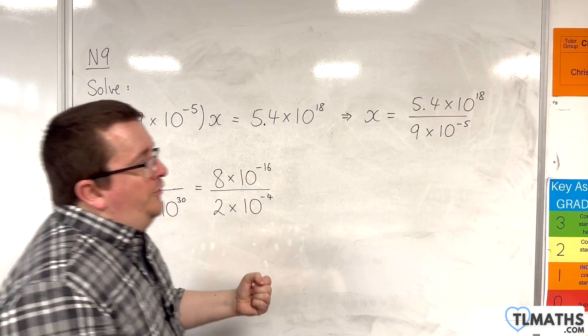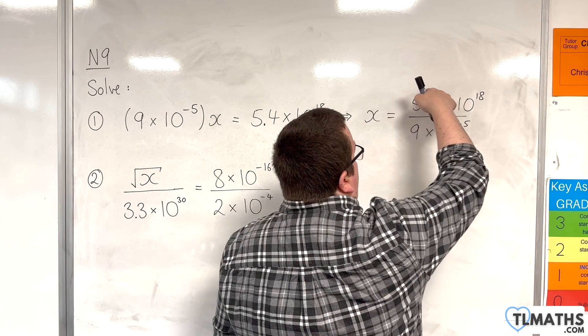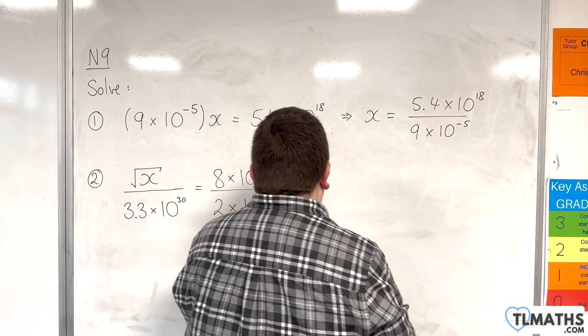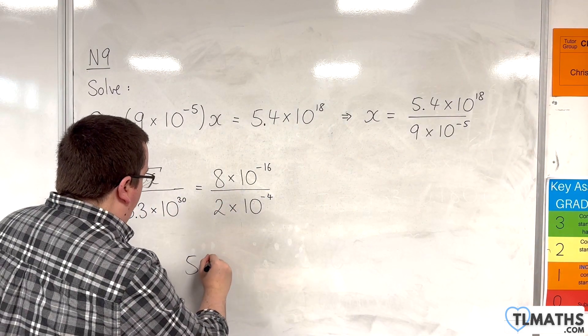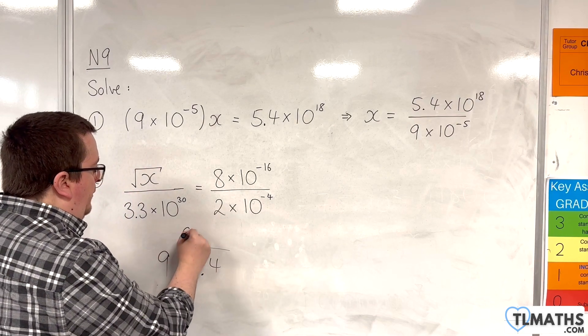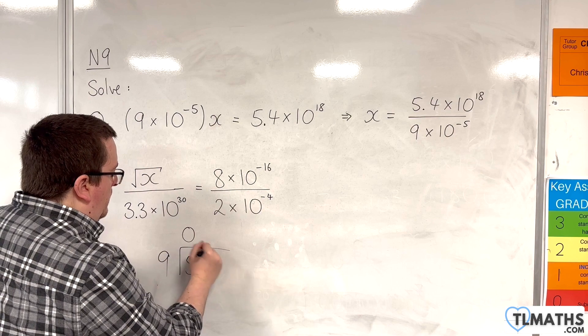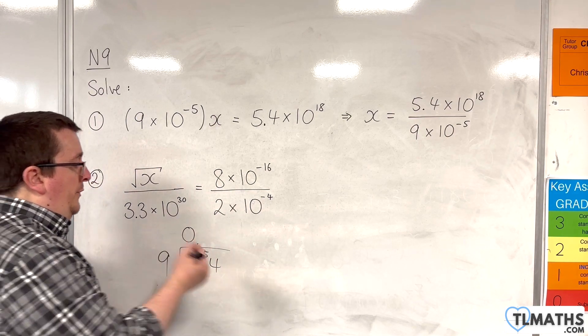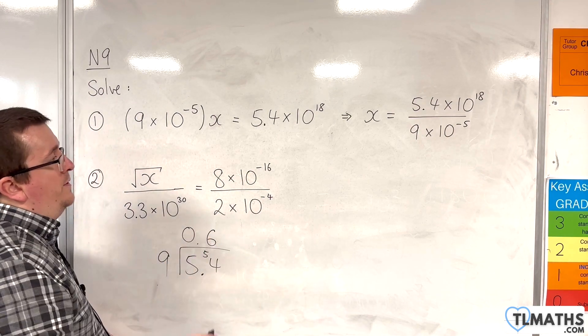Now, in order to work out what that is, I need to do 5.4 divided by 9. So, 5.4 divided by 9. 9 into 5 goes 0, 9 into 54 goes 6. So, this is 0.6.